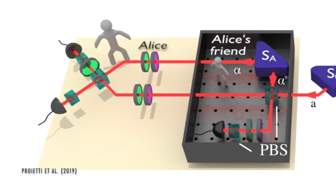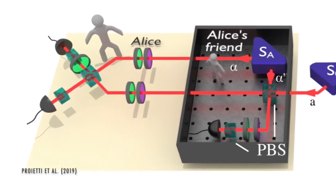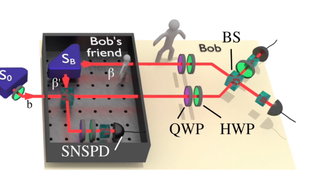Here's how their experiment was set up. Consider two laboratories controlled by Alice and Bob. Inside the labs, Alice's friend and Bob's friend measure the polarization of a photon that can either be horizontal or vertical.